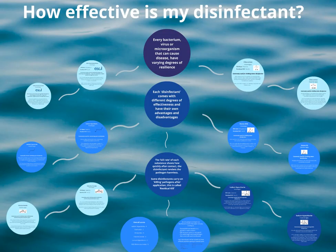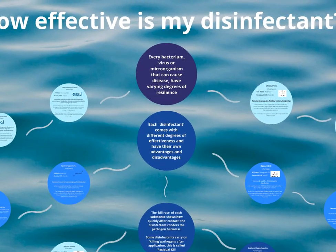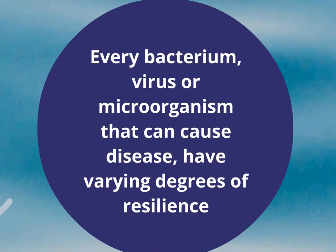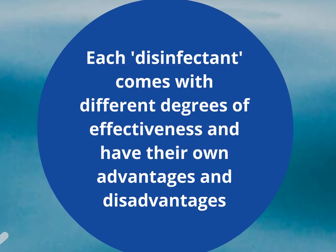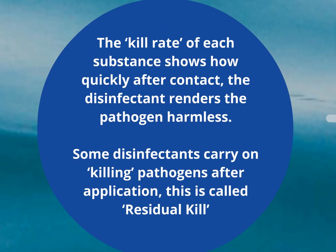How effective is my disinfectant? In this presentation we're going to look at six disinfectants and the advantages and disadvantages that they have in the water industry. Every bacterium, virus or microorganism that can cause disease have varying degrees of resilience. Each disinfectant comes with different degrees of effectiveness and have their own advantages and disadvantages. The kill rate of each substance shows how quickly after contact the disinfectant renders the pathogen harmless. Some disinfectants carry on killing pathogens after application — this is called residual kill.